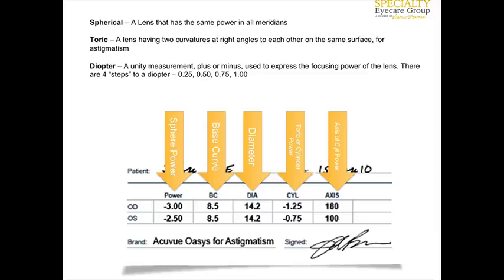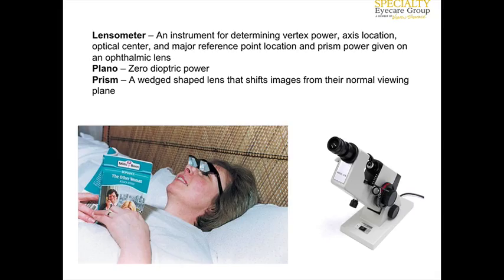When looking at a patient's prescription, the spherical component is the first number. The toric component is the cylinder. The axis indicates the location of the cylinder. Base curves are typically indicated as a smaller number like 8.2, 8.5, or 9.2, while diameter would indicate something around 13.5 to 15, 16, or 17. Lensometry is an instrument used to determine the vertex power, axis location, optical center, major reference points, and prism power given to a lens.